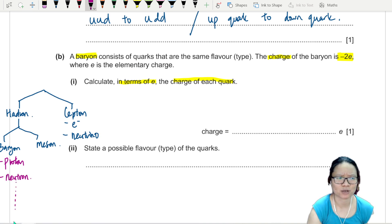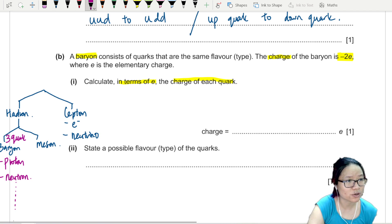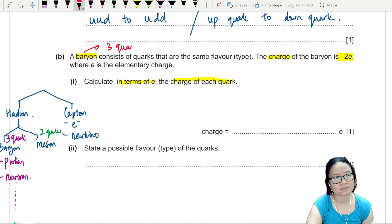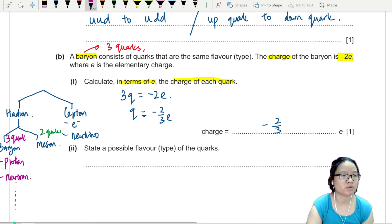Examples of baryon are proton, neutron. Are these the only baryons? No, there are many types. This one got three quarks. Meson has two quarks. But you have to know that baryon consists of three quarks. So 3q equals negative 2e. So the charge of each quark would be negative 2 over 3e. The three here shows that the baryon has three quarks.